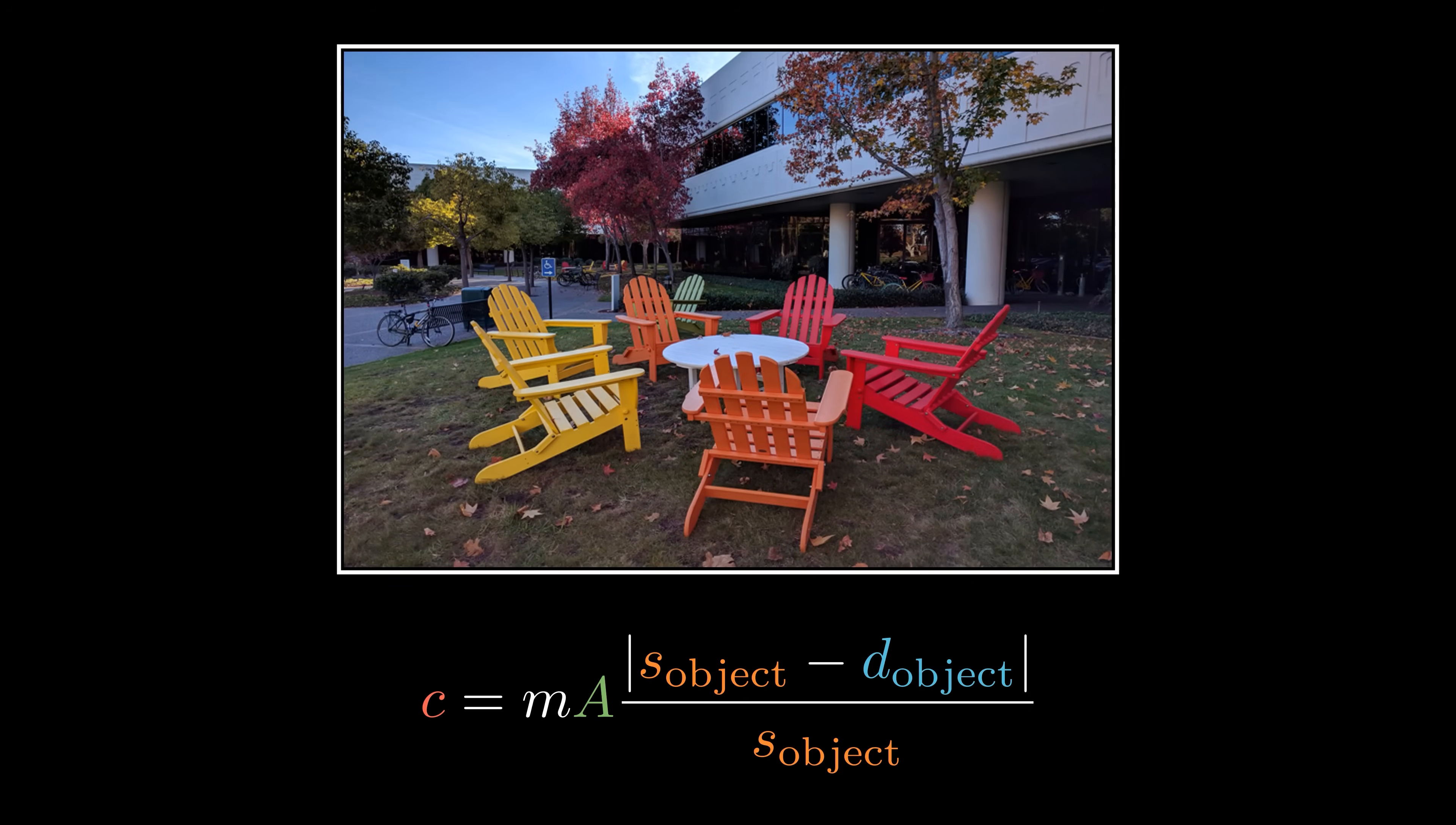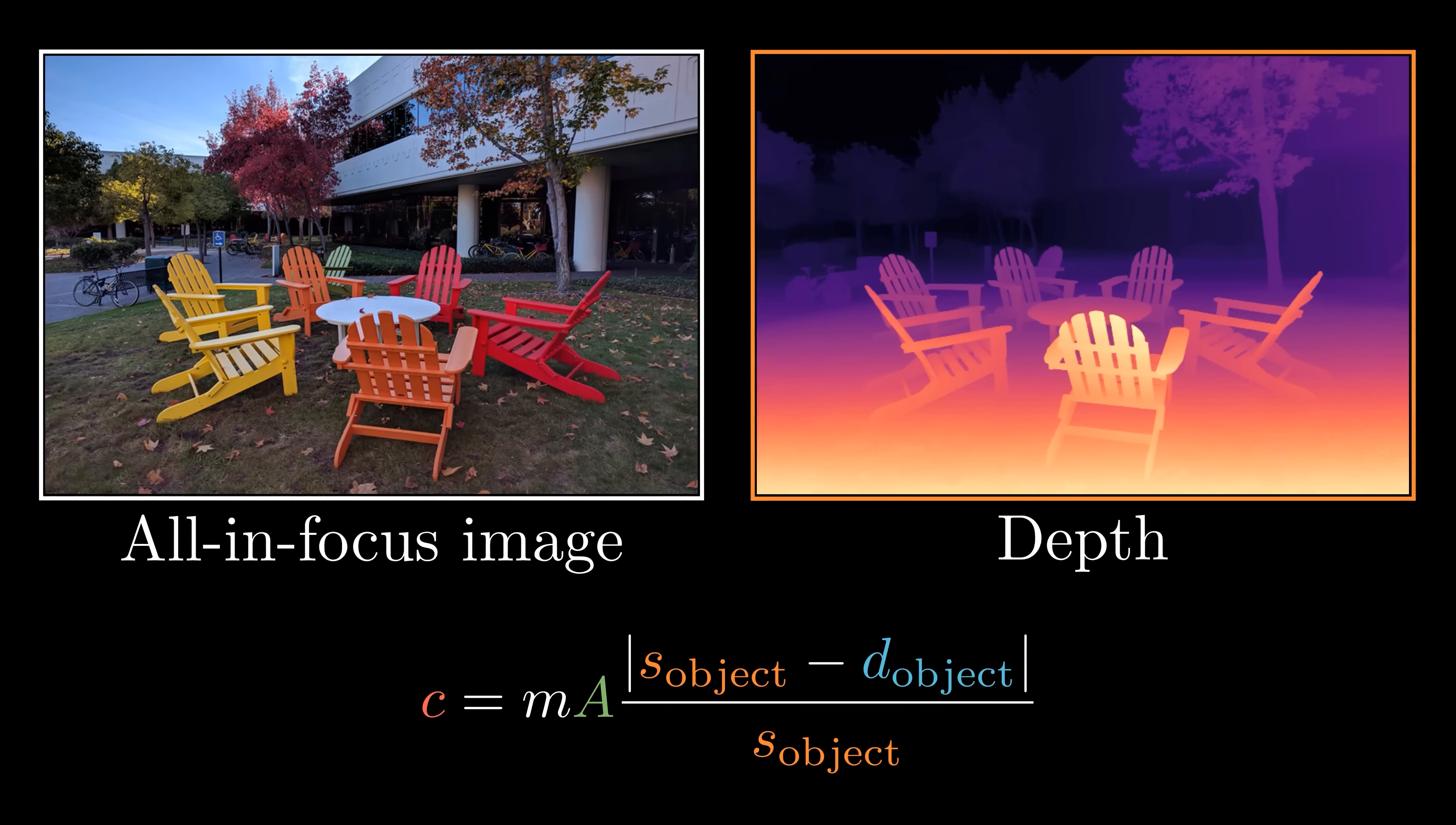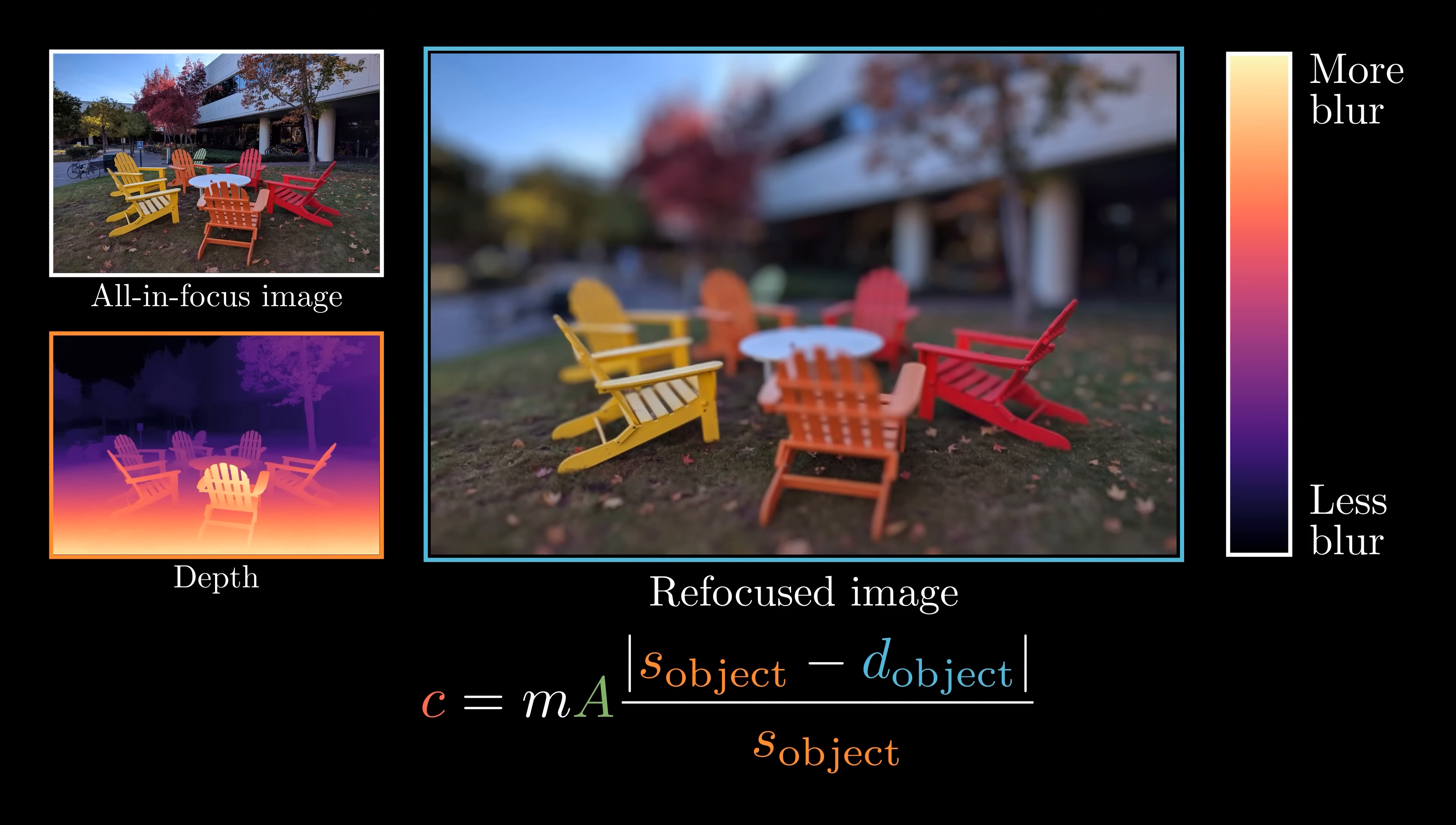Starting with a sharp all-in-focus image, we first estimate its dense depth map. This depth map tells us the distance of the scene for every pixel in the image. With the equation, we can compute a defocus map. The defocus map specifies how blurry a point should be in the image. Here we change the sensor distance so that the focus plane is close to the camera. The purple color represents less blur while the orange color represents more blur. With the defocus map, we can synthesize this image by applying spatially varying blur to the input all-in-focus image.